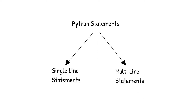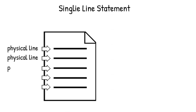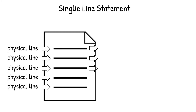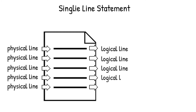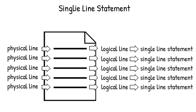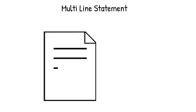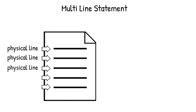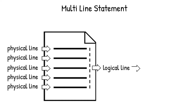Python statements can be broadly categorized into single-line statements and multi-line statements. A single-line statement is when a physical line of code contains a complete logical line for the interpreter. In this example, each physical line has a logical instruction for the interpreter, and hence each line can be known as a single-line statement.